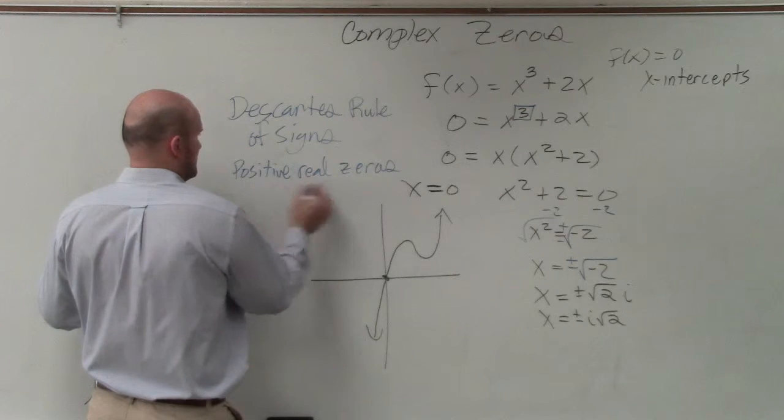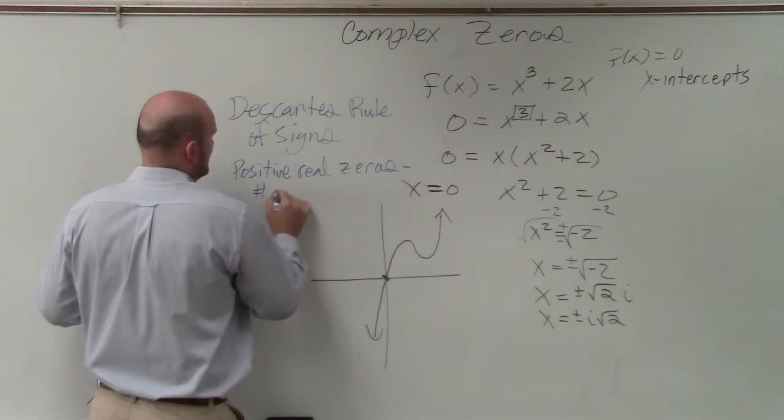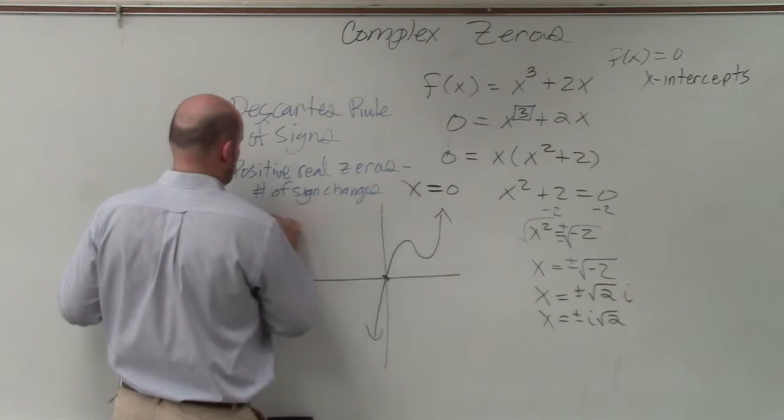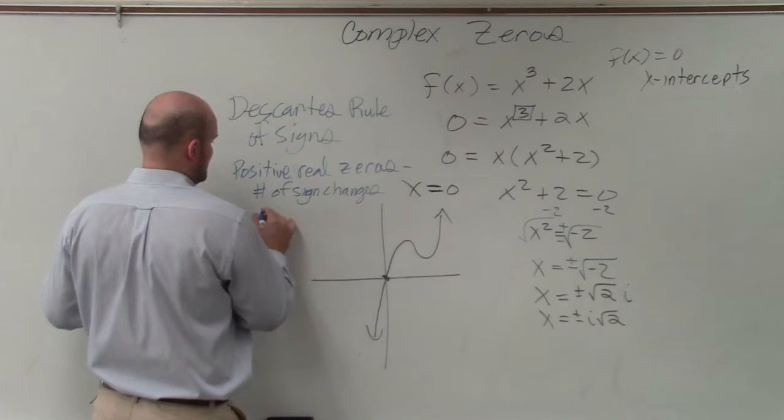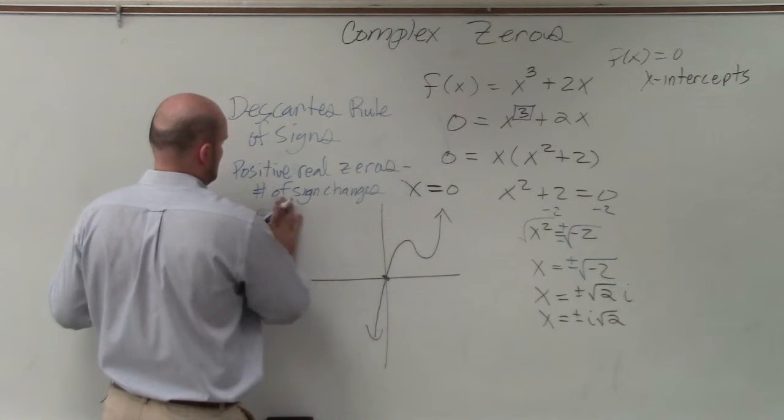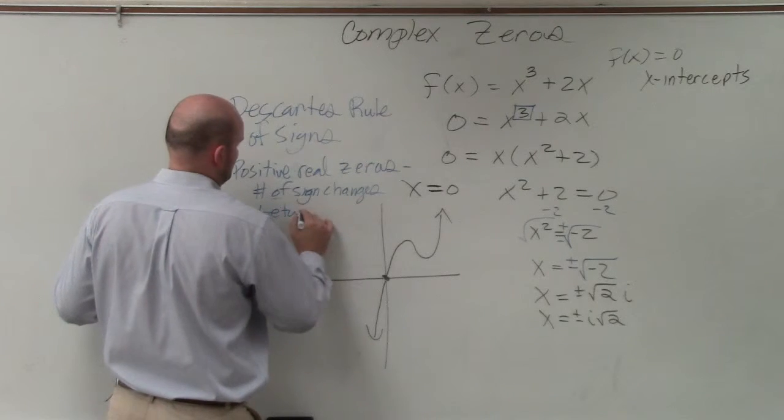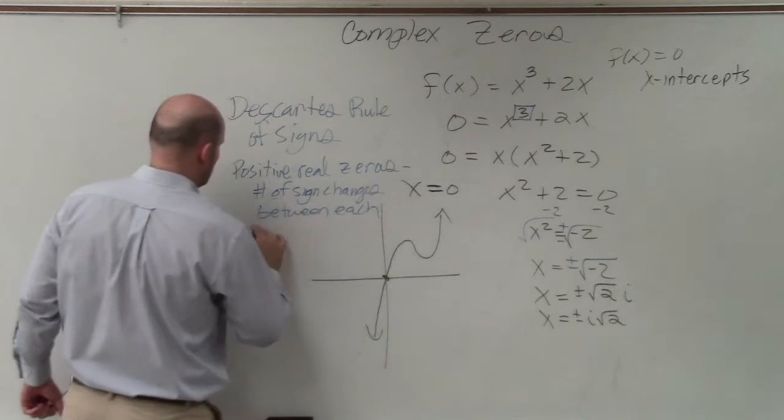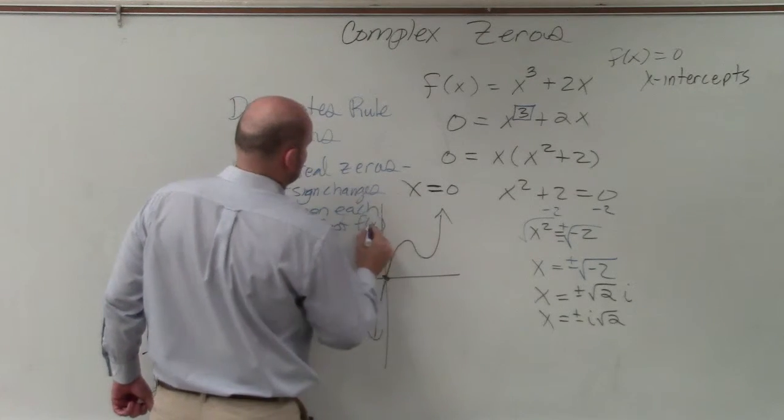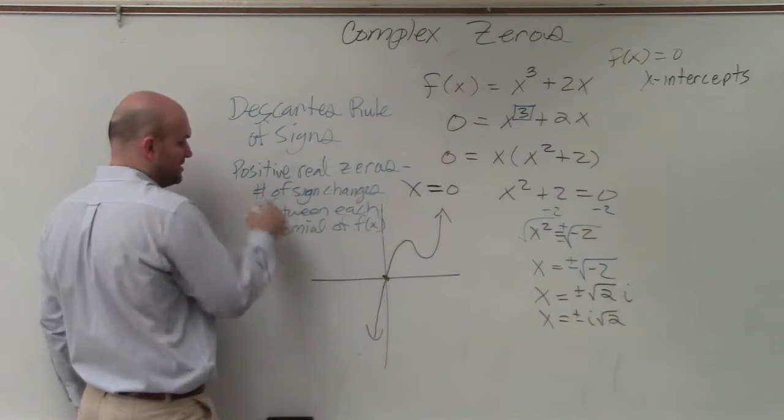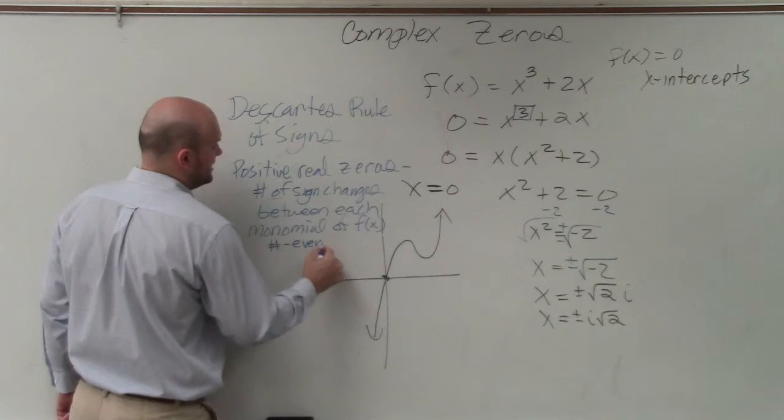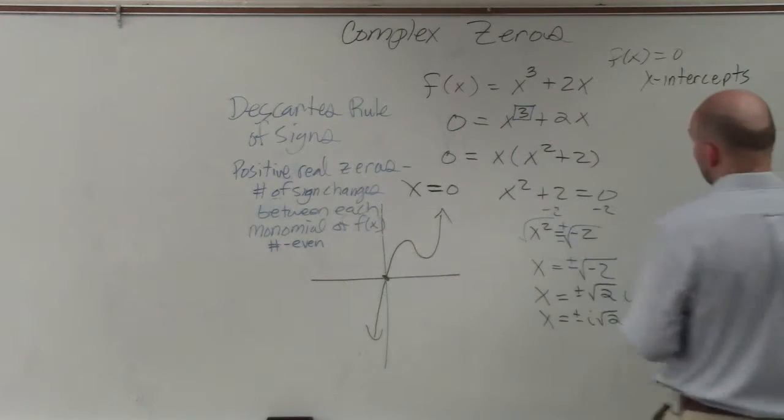Positive real zeros. So this is the number of sign changes between each monomial of f(x). And it's that number, but then also the number minus an even number. And I'll explain that later. I know it gets everybody confused.